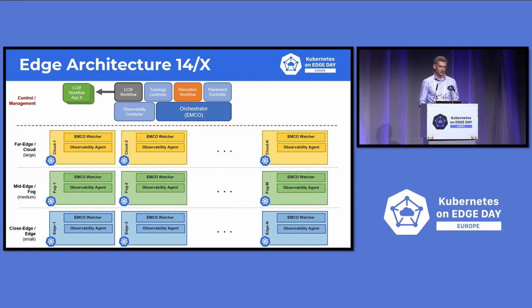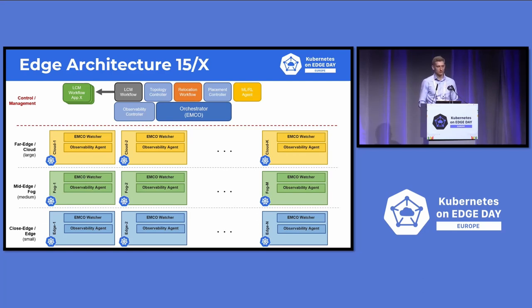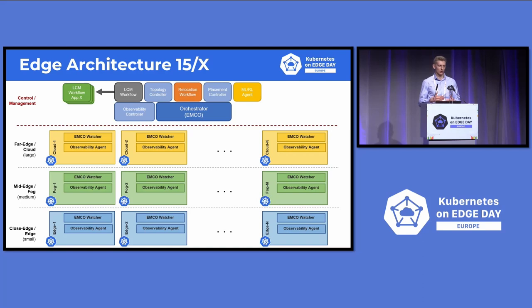This is not yet targeted for production — it is open source and presented as a proof of concept, still work in progress. As an example of further work, we are also considering a machine learning reinforcement learning agent to interact with the placement controller. Based on that, we believe we can further optimize the decision of which cluster is best. I've shown you the general view and our process. I'll now hand back to Greg to continue.